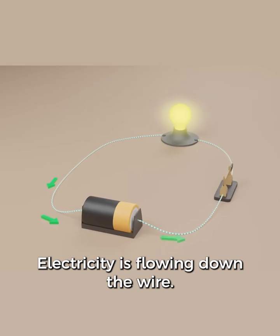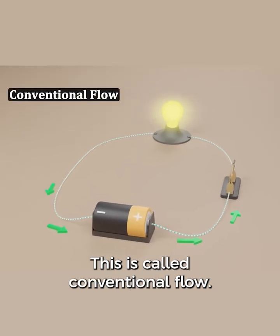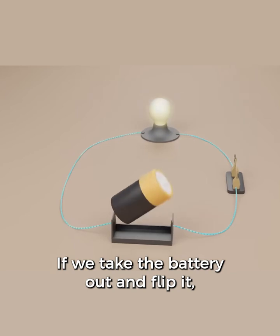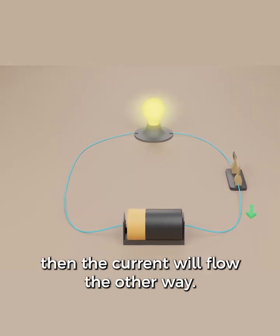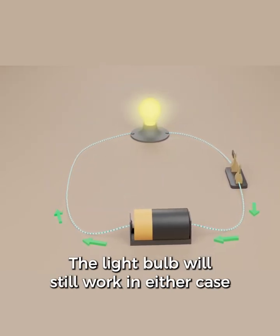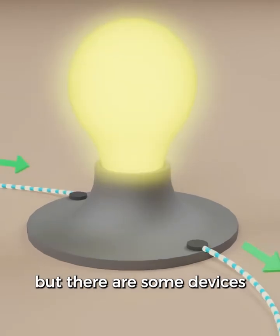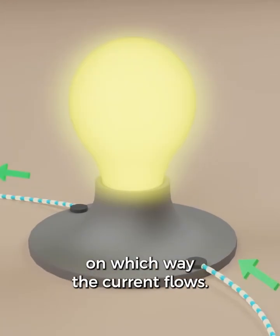Electricity is flowing down the wire. This is called conventional flow. If we take the battery out and flip it, then the current will flow the other way. The light bulb will still work in either case, but there are some devices that will work differently depending on which way the current flows.